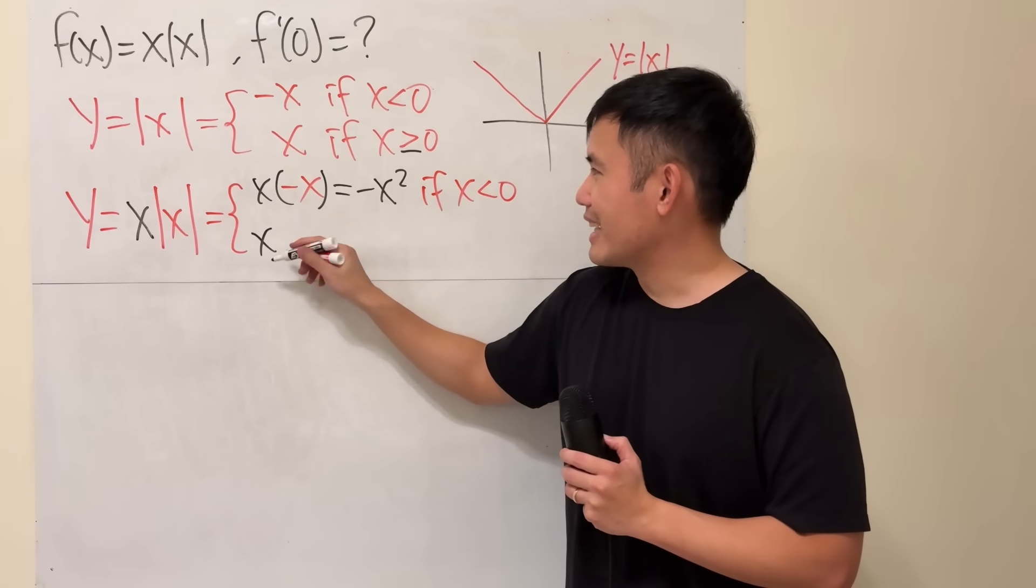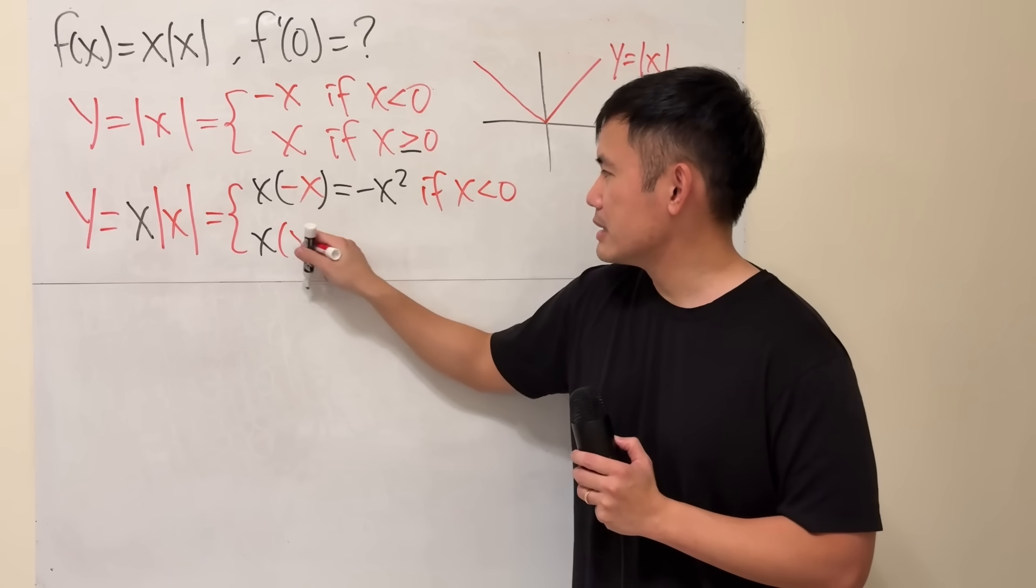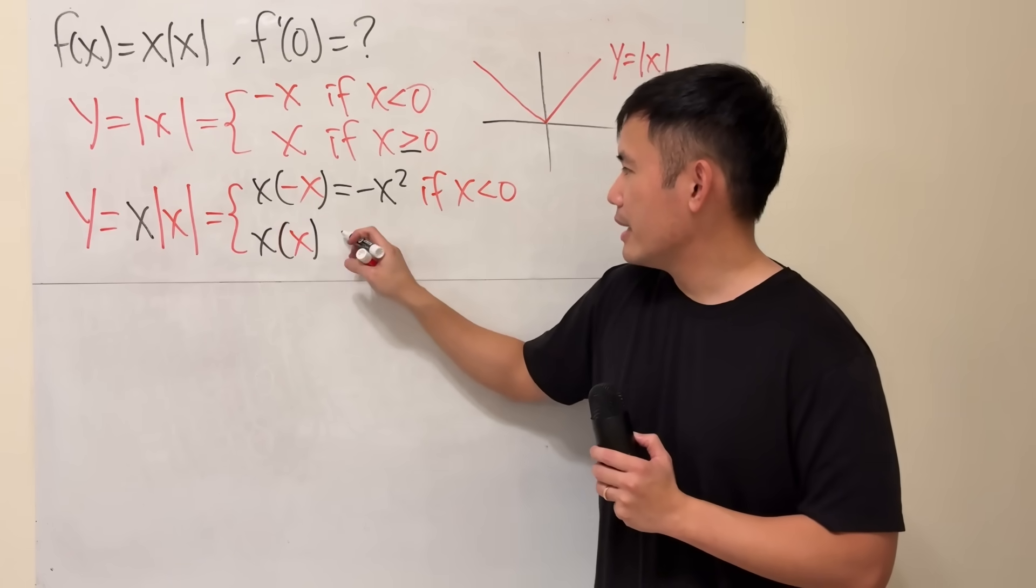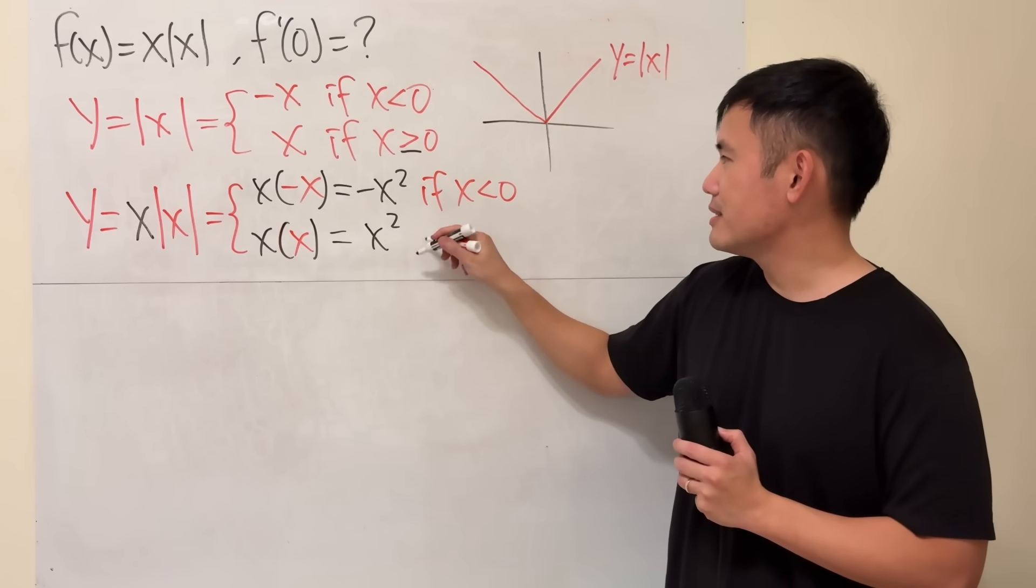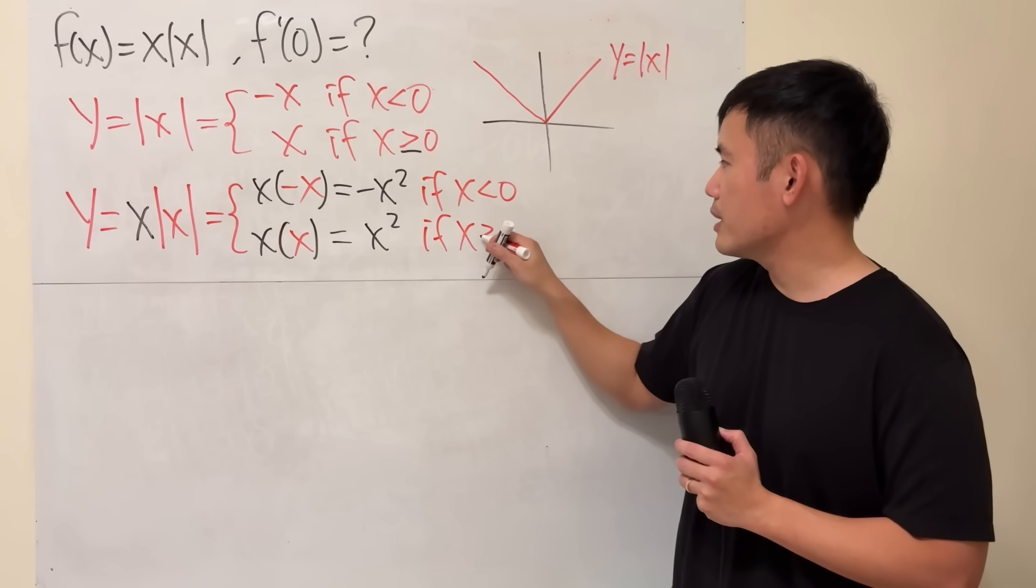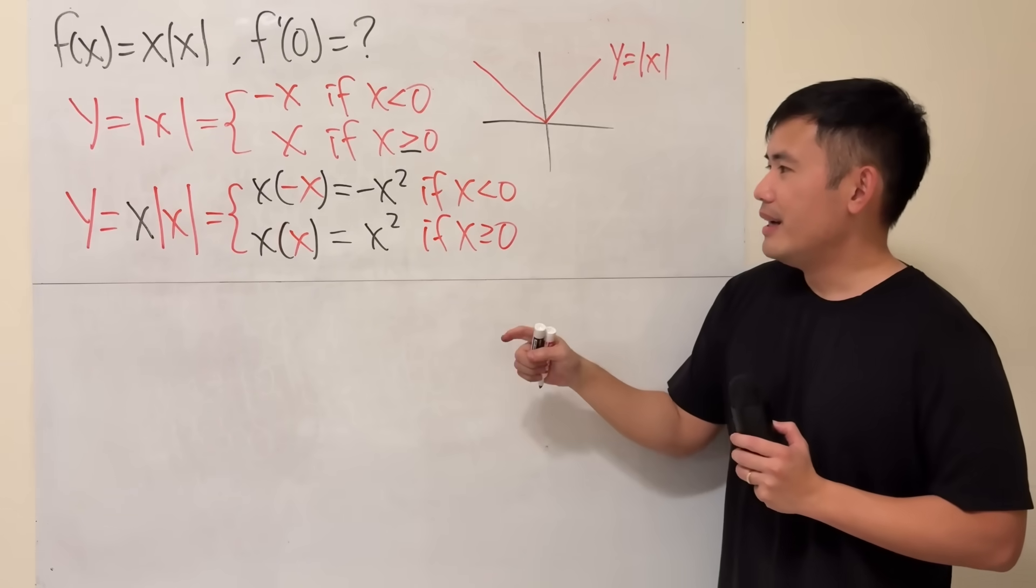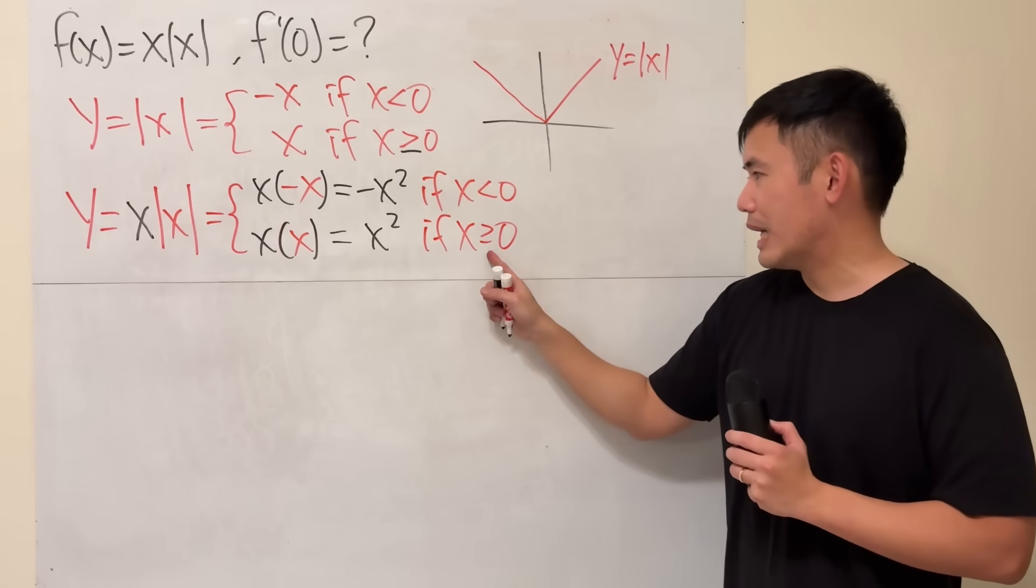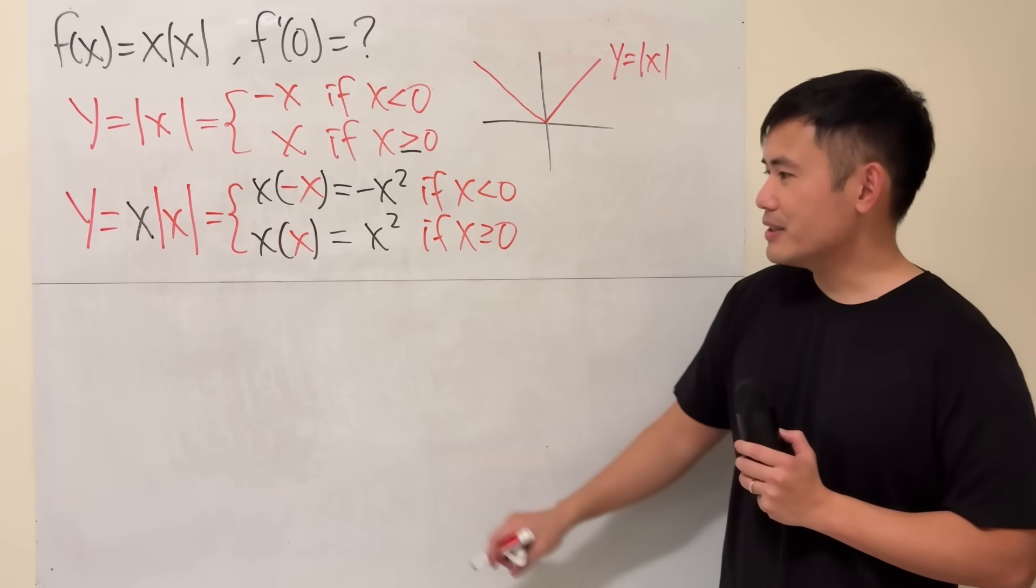Well, x times the other part, which is x. And that will be positive x squared. And this is true if x is greater than or equal to 0. We can plug in 0, so we still have to maintain an equal sign. Now, check this out.